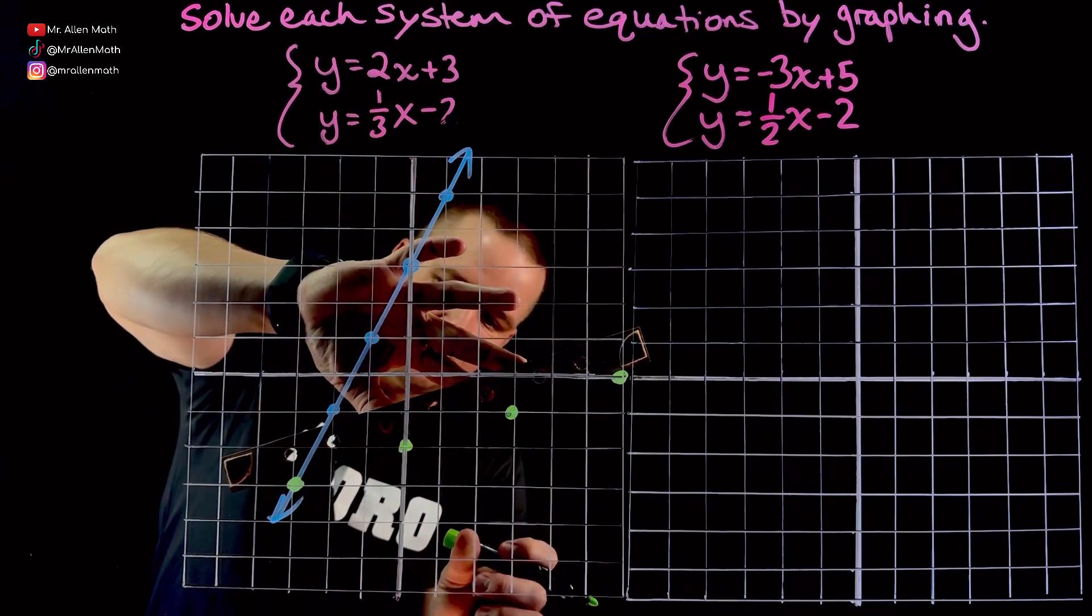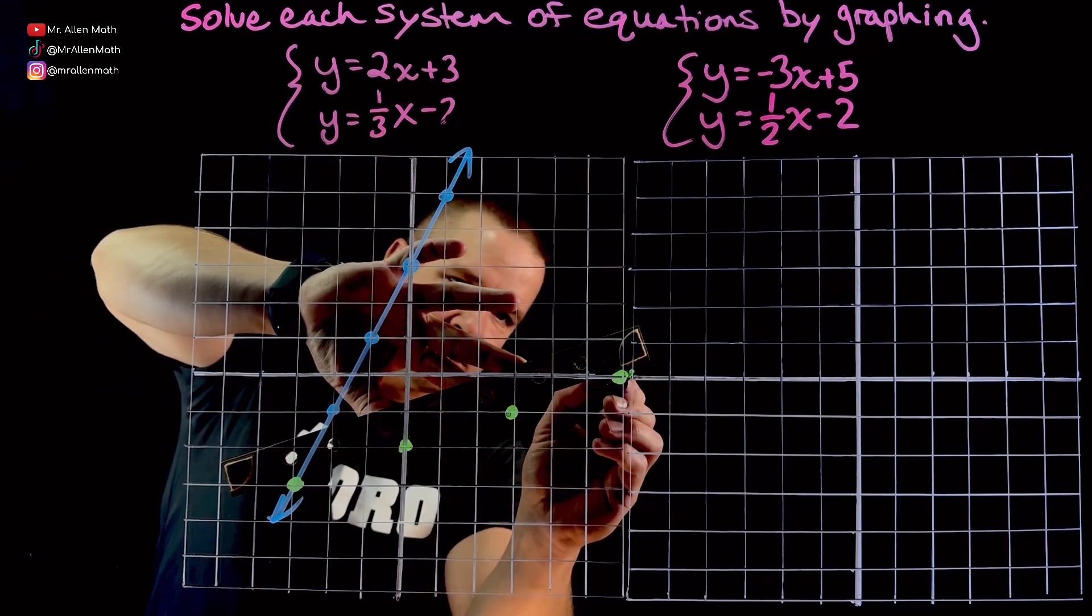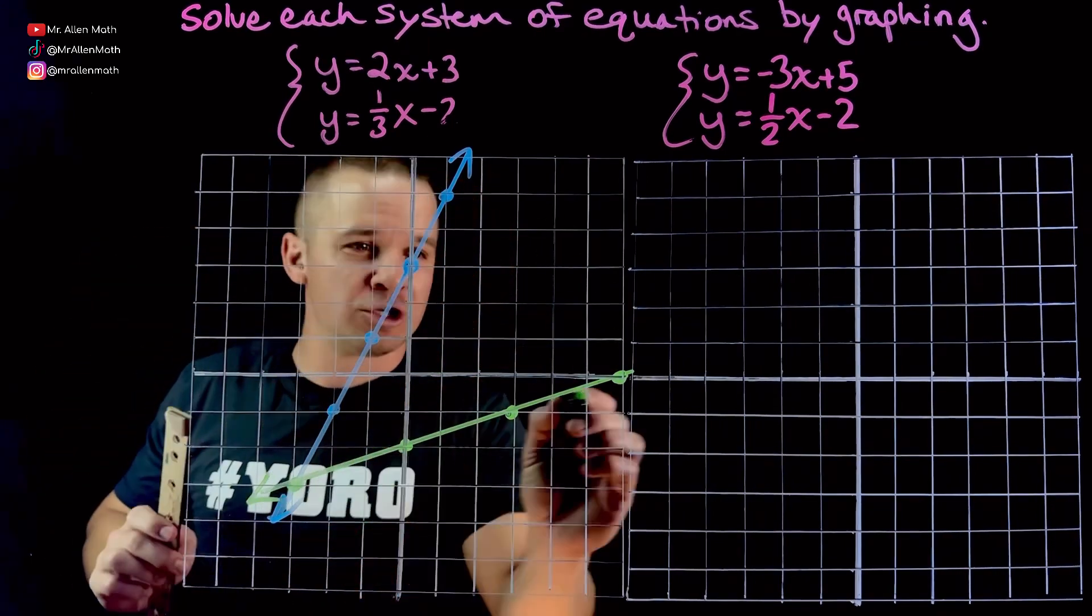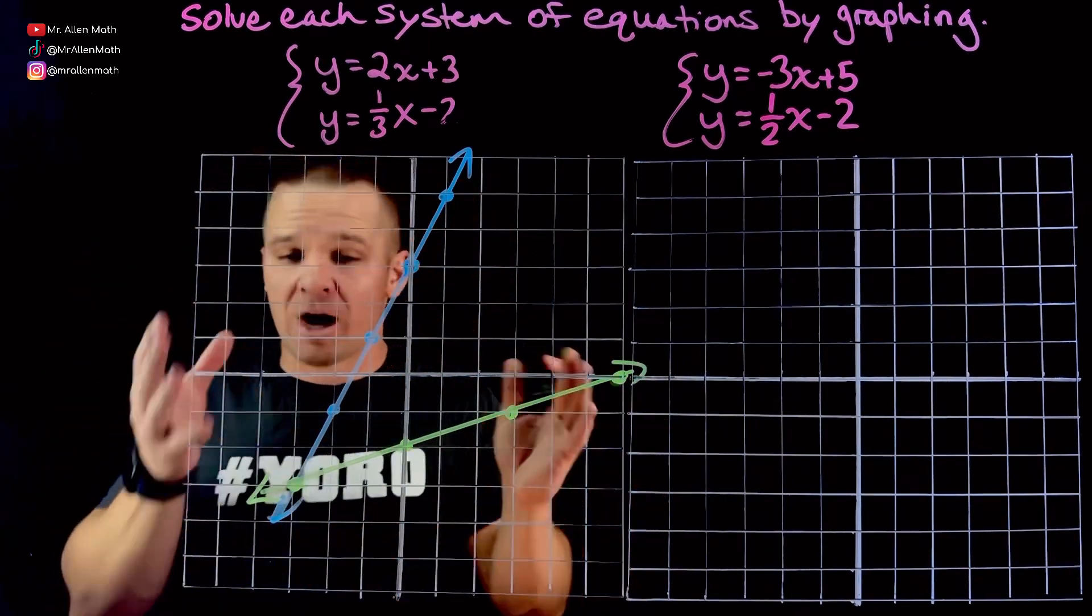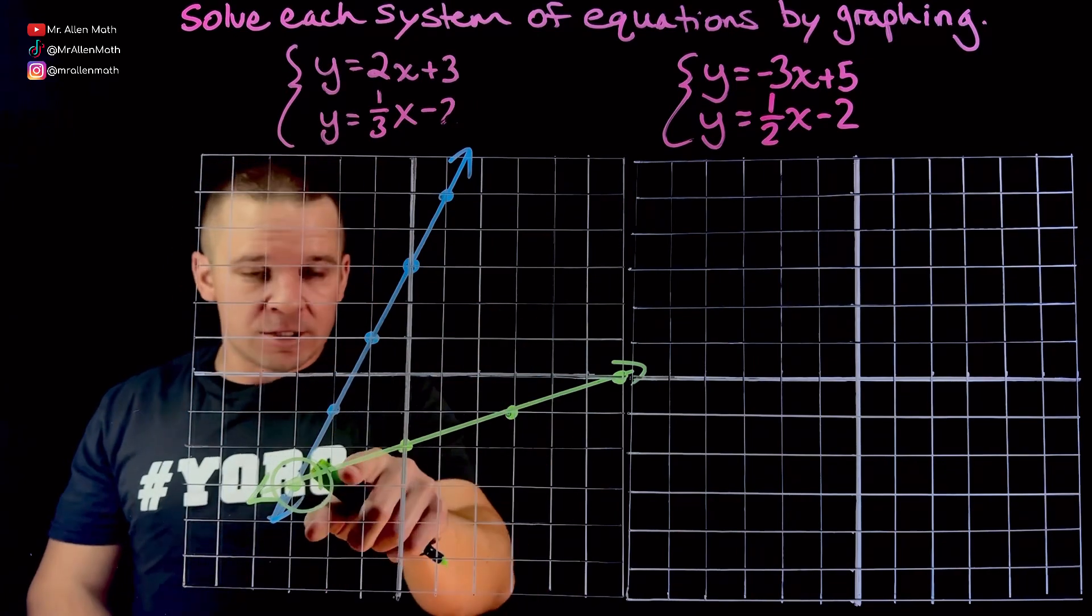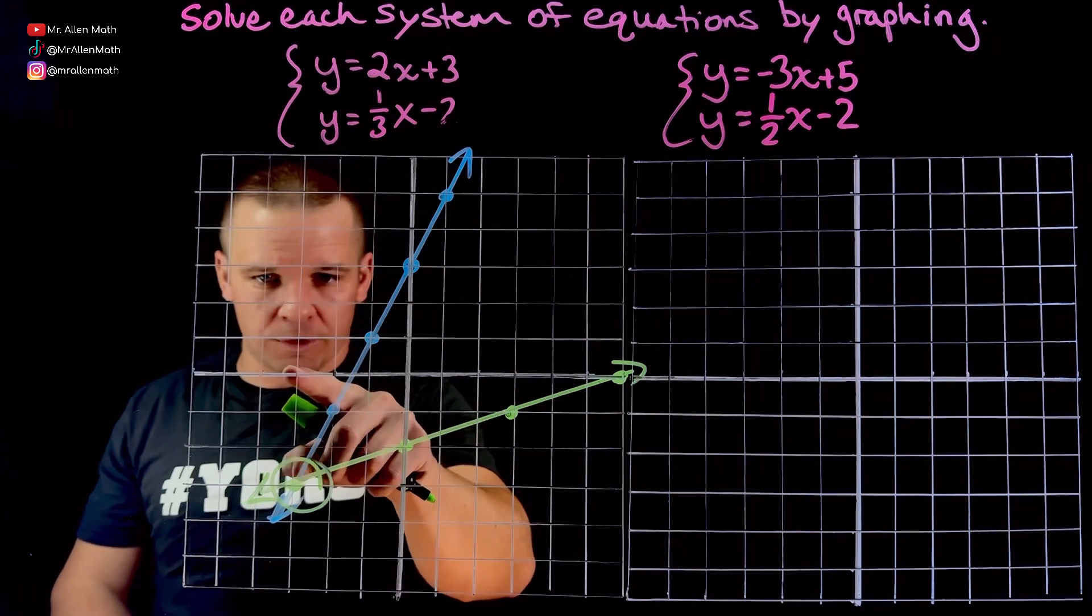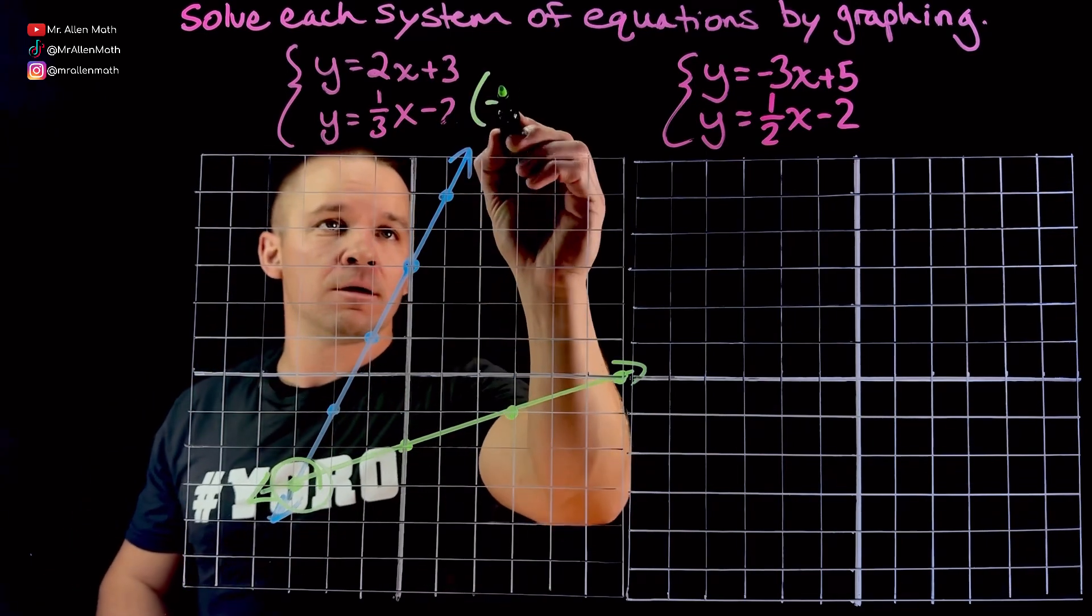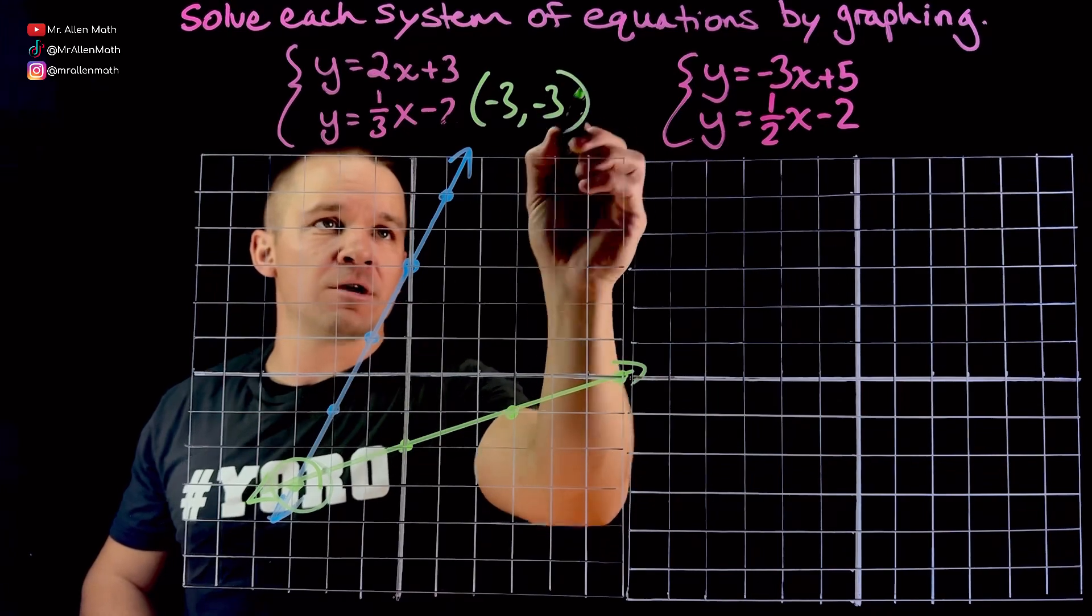Let's see here. Connect these bad boys with a straight edge. Usually, you'll be asked to still graph them regardless of where that solution is or whatever the solution is. They want you to graph them, but then also circle that solution and write it down. So let's see here. We got 1, 2, 3, down 1, 2, 3. So negative 3, negative 3.